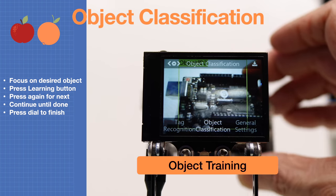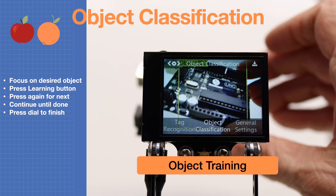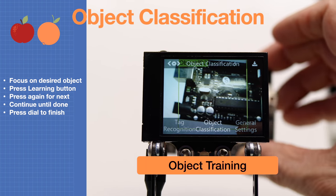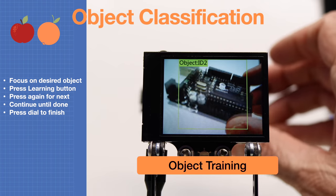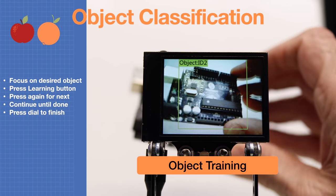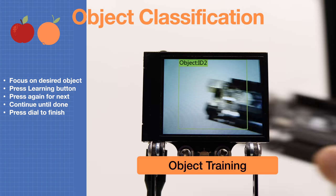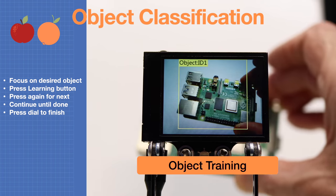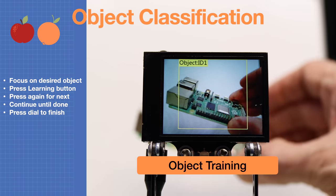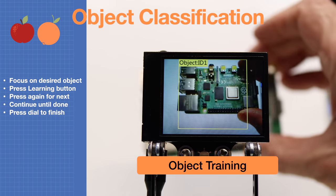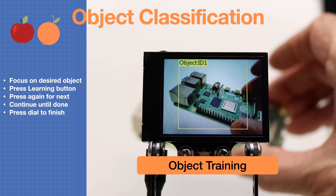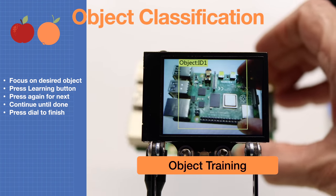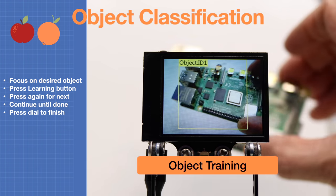Now the Husky Lens has learned the objects: placing an Arduino in front of it displays object ID number two, with nothing visible object ID three is seen, and the Raspberry Pi board is correctly recognized as object ID one.